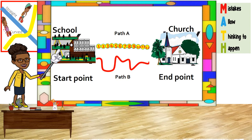Now let us count the points on the curved path: 1, 2, 3, 4, 5, 6, 7, 8, 9, 10, 11, 12, 13, 14, 15, 16, 17, 18, 19, 20. There are 20 points on the curved path.